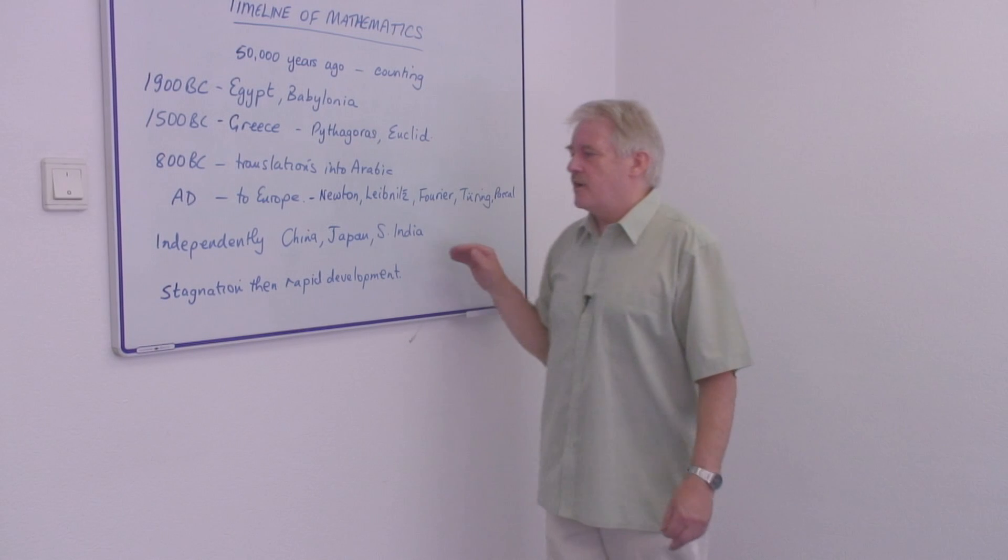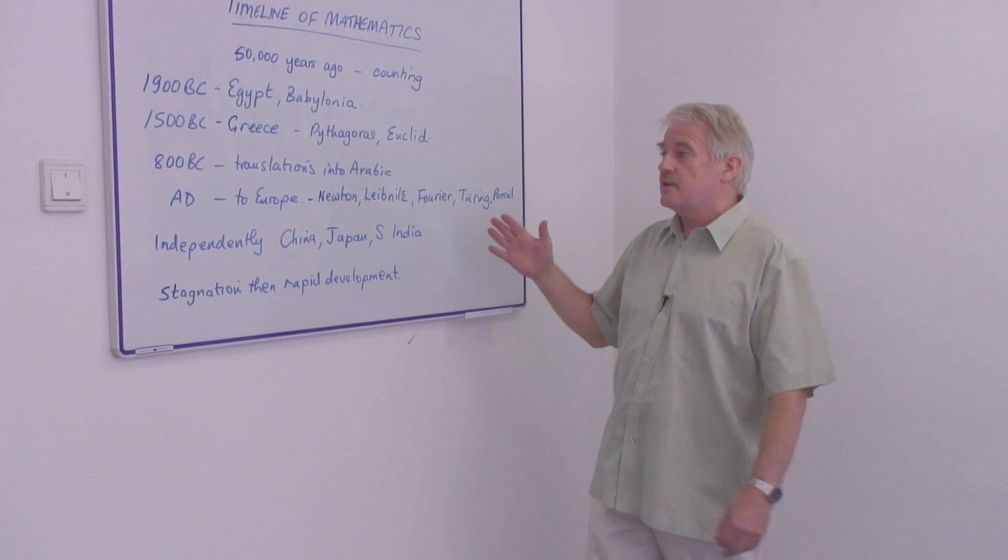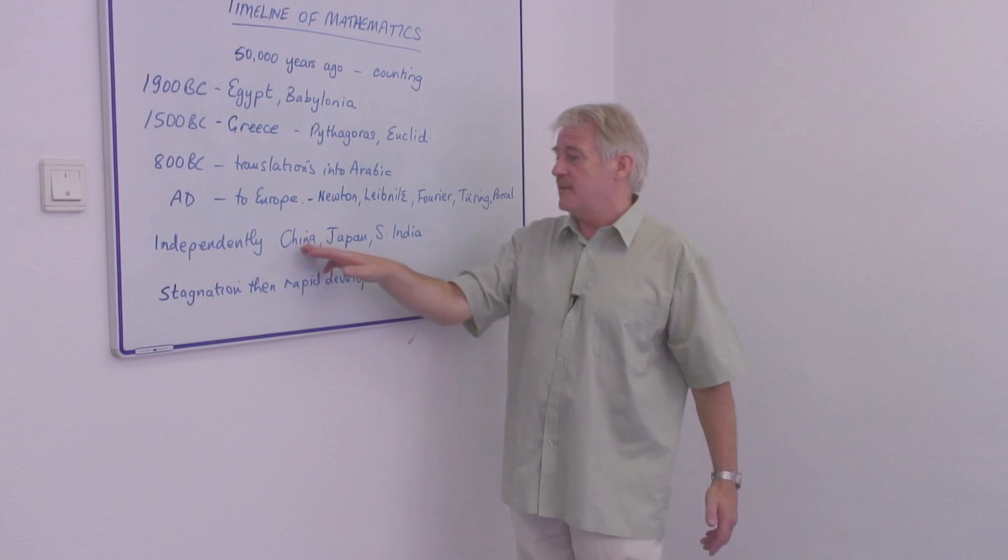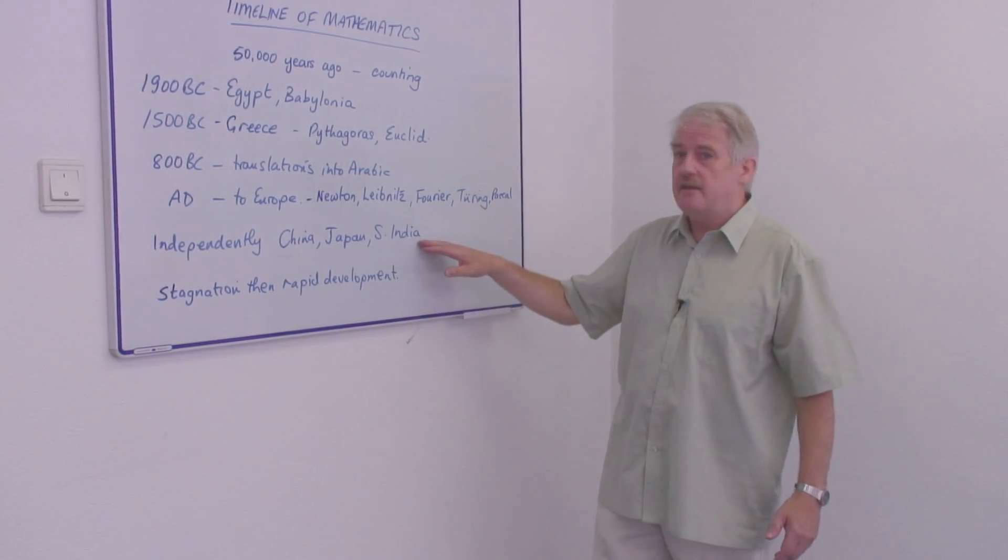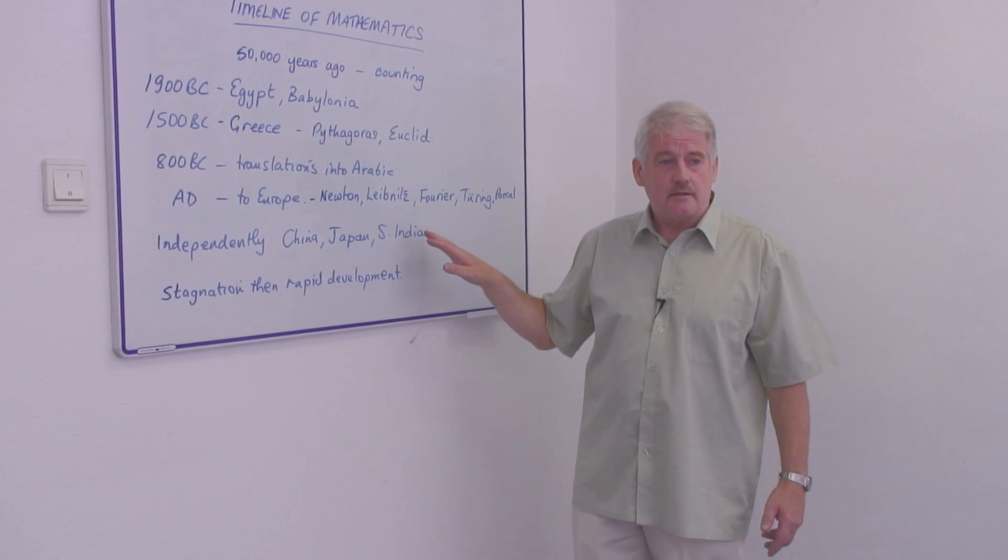During this period of time, during the whole period of the timeline of mathematics, in fact, things were going on in parallel in places like China, Japan, and South India. Even as far back as 1500 BC, South India was a major center of mathematical excellence.